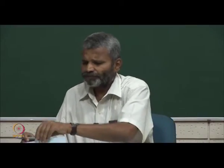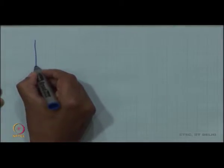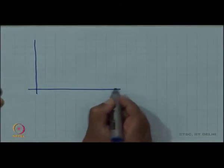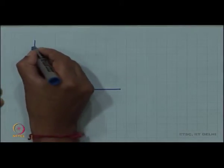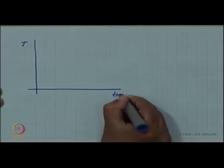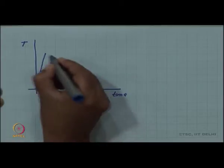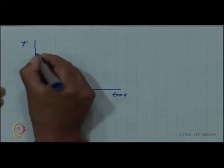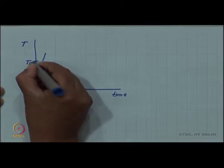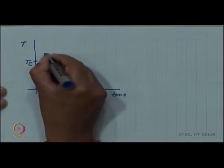Now, tempering we showed when I drew the time temperature diagram, temperature versus time. We heat the alloy above the eutectoid temperature, for eutectoid steel, it has to be above the eutectoid temperature such that you form austenite.